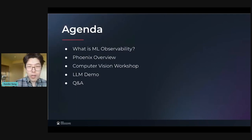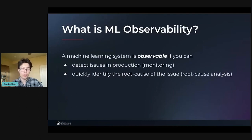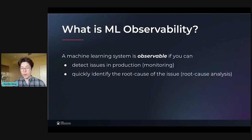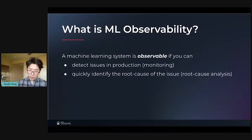So without any further ado, let's go ahead and jump into the presentation. Let's talk about what is ML observability. ML observability has two parts. Your machine learning system is observable if two things are true. First of all, if you have monitoring — the ability to detect issues when they happen in production. The kinds of issues we're talking about here are data quality issues, for example if you're missing a feature in your pipeline, or a drift issue — and we're going to see an example of a drift issue in a moment.